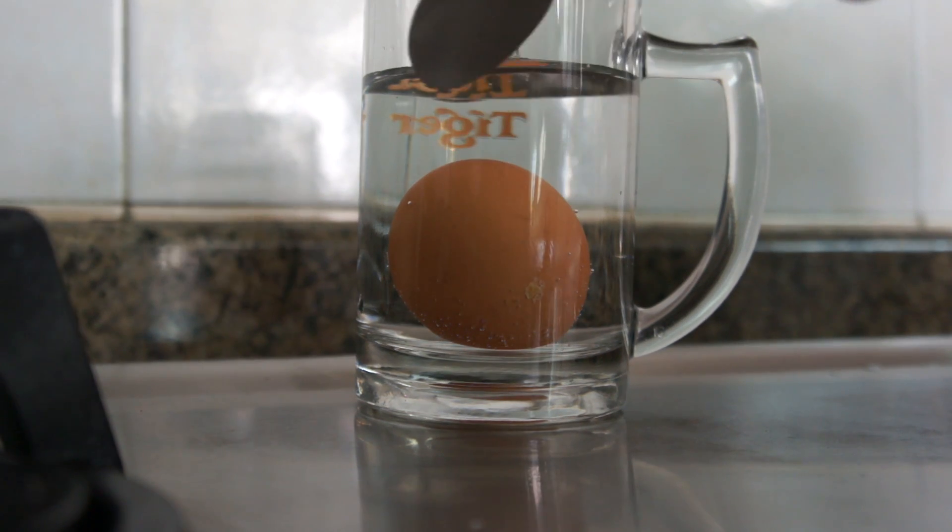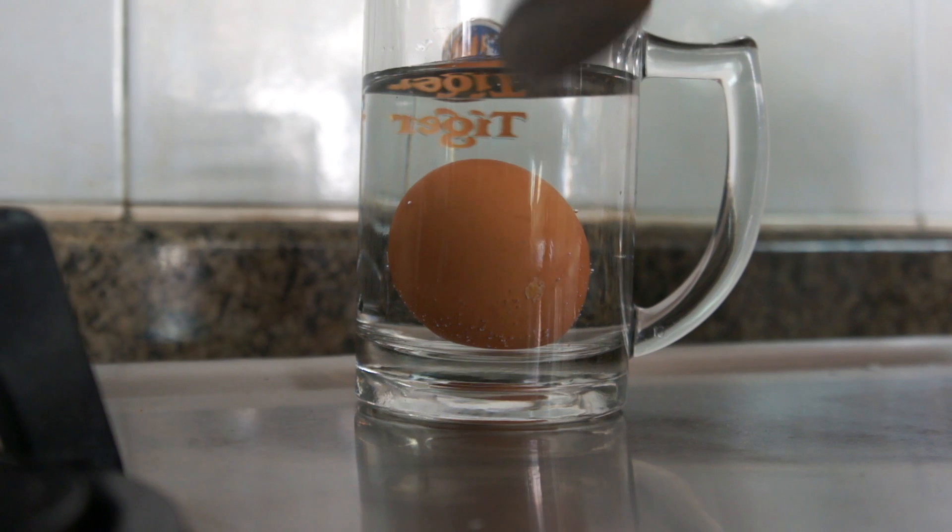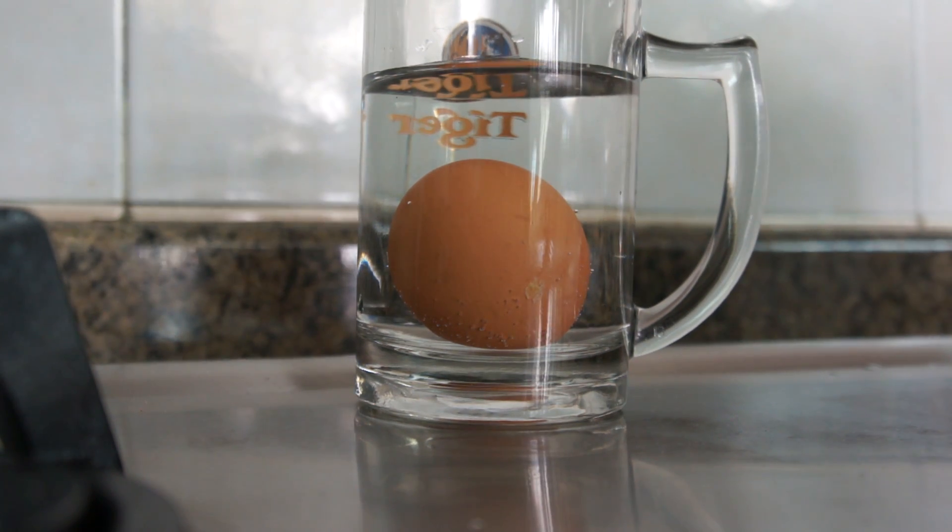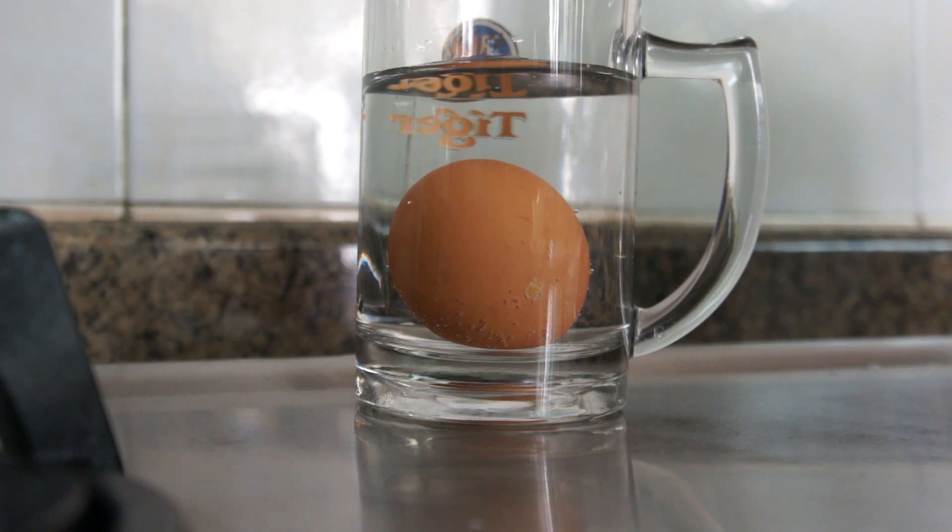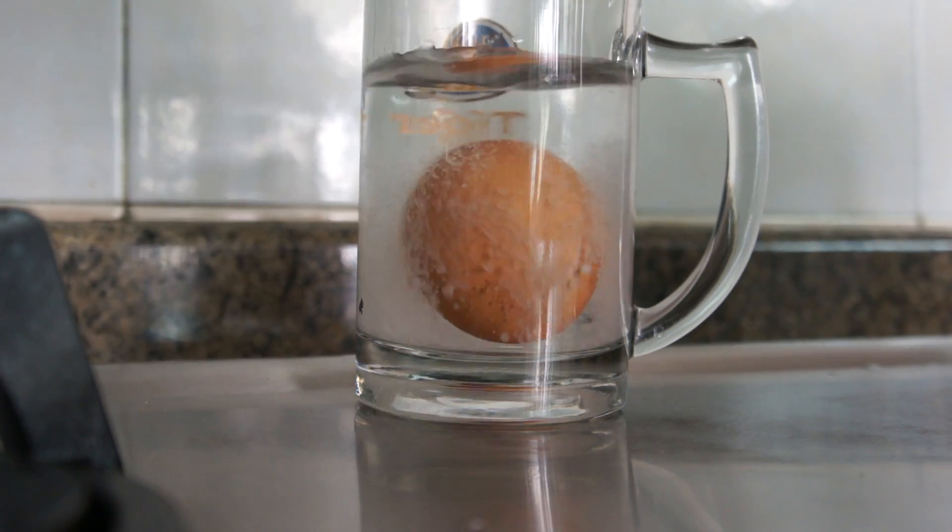All right, here we have an egg and as you can see it sinks in this mug of water. What we're going to do next is to add some salt and that will increase the density of the water, and let's see what happens to the egg.